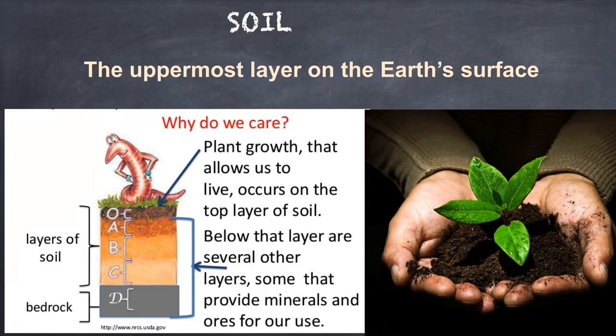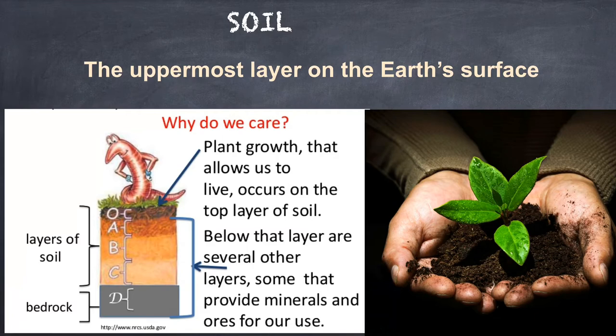Now let's talk about the first wealth of nature — soil. Soil is the uppermost layer on the earth's surface. Soil is formed through the breaking of rocks and forms a top layer of the earth's surface. Natural forces like wind, rain, temperature and flowing water break down the rocks that make up the earth's surface. These natural forces keep on breaking these rocks into uneven small pieces until they turn into soft, powdered-like soil.